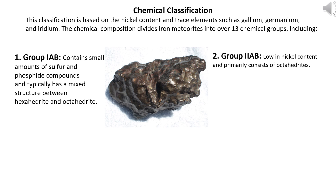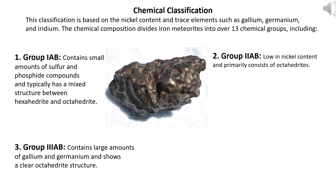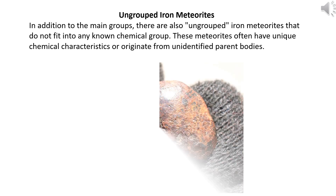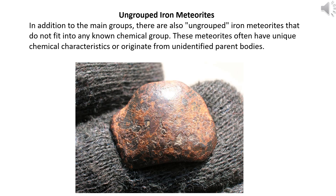Group IIAB: low in nickel content and primarily consists of octahedrites. Group IIIAB: contains large amounts of gallium and germanium and shows a clear octahedrite structure. Group IVB: very high nickel content with a structure resembling an ataxite. In addition to the main groups, there are also ungrouped iron meteorites that do not fit into any known chemical group. These meteorites often have unique chemical characteristics or originate from unidentified parent bodies.